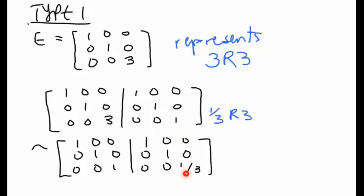So the right hand side here tells us the inverse of our original matrix. So we conclude that E inverse equals 1 0 0, 0 1 0, 0 0 1/3. Now what I want you to do is take a look at E, take a look at E inverse and see if you can see the pattern.